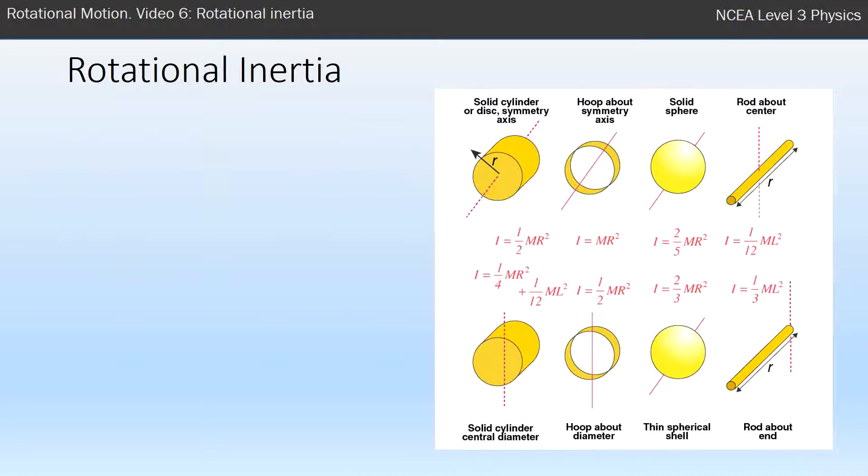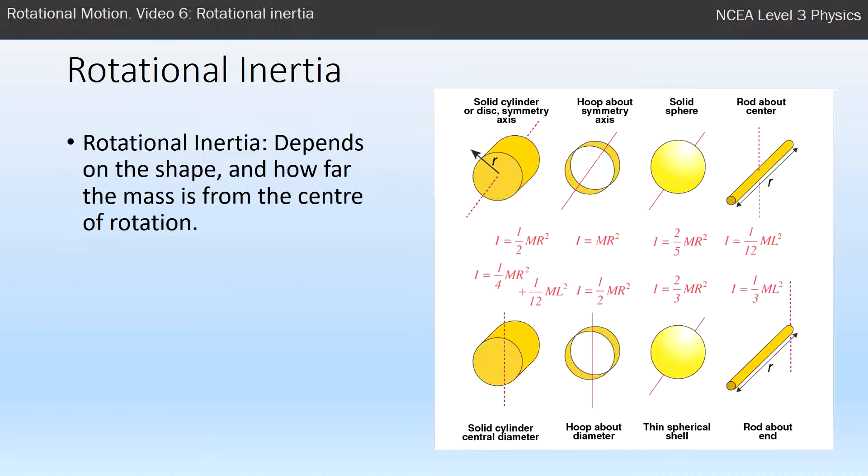How hard or easy it is to rotate something depends on where the mass in that system is. It depends on the shape and how far that mass is from the center. The further all the mass is from the center, the harder it is to rotate.